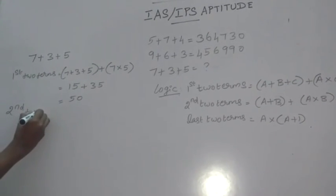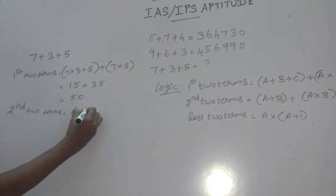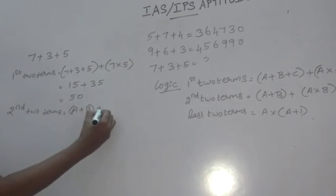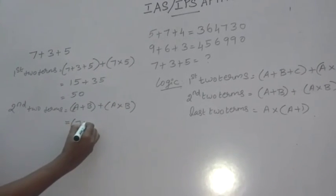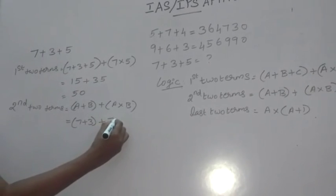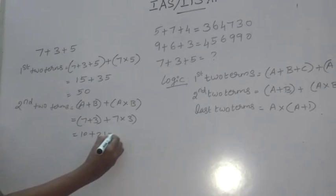And second 2 terms is a plus b plus a into b. That is, 7 plus 3 plus 7 into 3. 10 plus 21 is equal to 31.